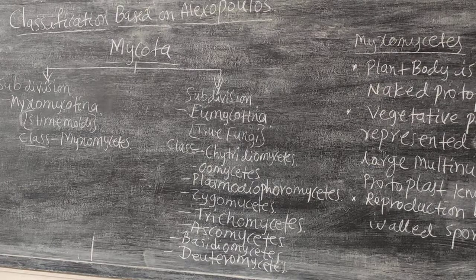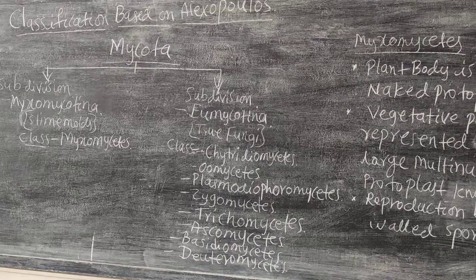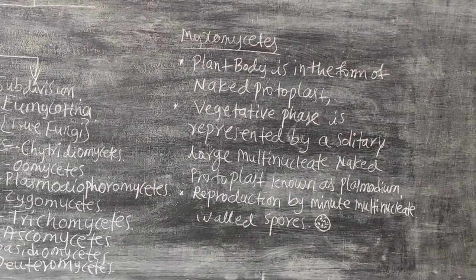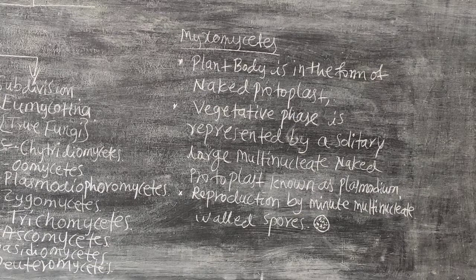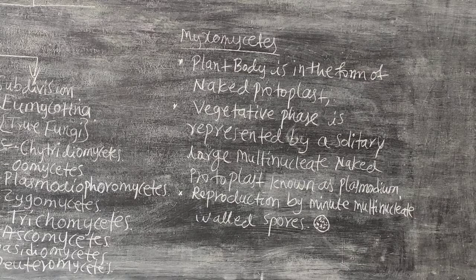This covers the general classification of Alexopoulos. Now, the subdivision Myxomycotina includes the class Myxomycetes. In Myxomycetes, the plant body is in the form of a naked protoplast, commonly called plasmodium. The vegetative phase is represented by a solitary, large, multi-nucleated naked protoplast known as plasmodium.